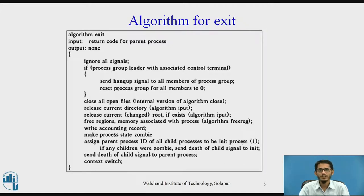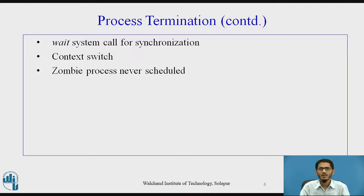User level programs can later read the accounting file to gather various statistics useful for performance monitoring and customer billing. Finally, the kernel disconnects the process from the process tree by making process 1 (init) adopt all its child processes — process 1 now becomes the legal parent of all live children the exiting process had created. If any of the children are zombies, the exiting process sends init a death-of-child signal so that init can remove them from the process table. The exiting process also sends its parent a death-of-child signal. In the typical scenario, the parent process executes a wait system call to synchronize with the exiting child, and the zombie process does a context switch so the kernel can schedule another process. The kernel never schedules a zombie process to execute.